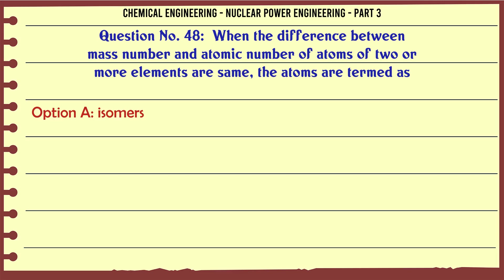When the difference between mass number and atomic number of atoms of two or more elements are same, the atoms are termed as isotones. The correct answer is isotones.